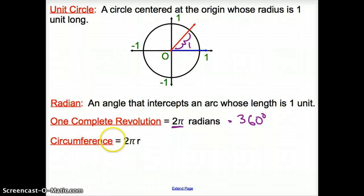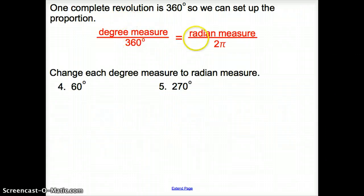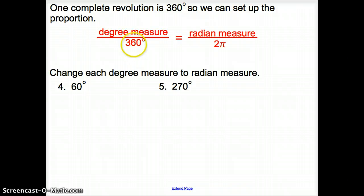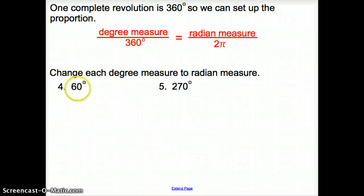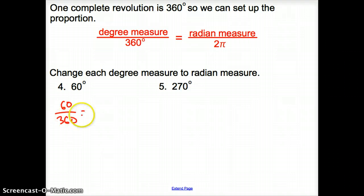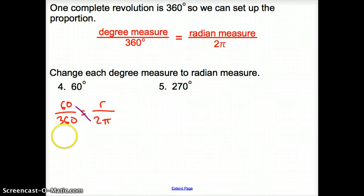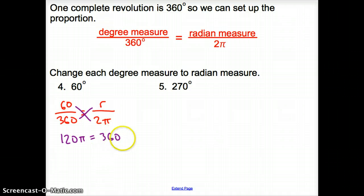We can convert between radians and degrees using this proportion: the circumference in radians is 2πr. We use the proportion where degree measure is over 360, and radian measure is over 2π. For 60 degrees, that goes over 360, so it's 60 over 360. We set that equal to r over 2π. Cross multiplying: 60 times 2π is 120π, and that equals 360 times r.